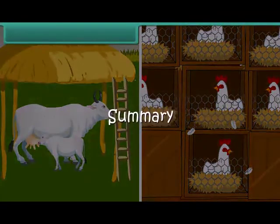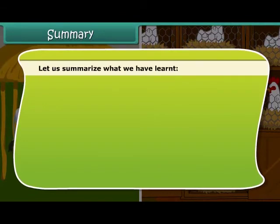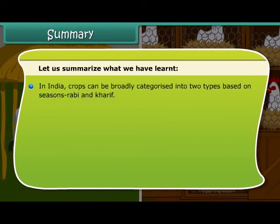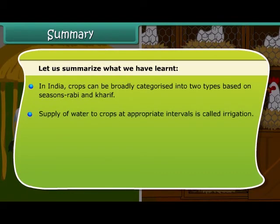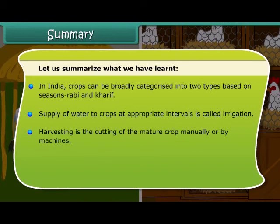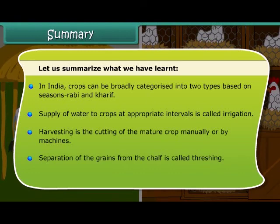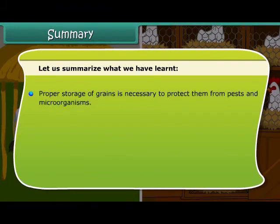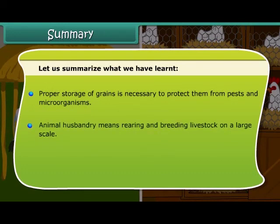Summary. In India, crops can be broadly categorized into two types based on the seasons they are grown in — Rabi and Kharif. Supply of water to crops at appropriate intervals is called irrigation. Harvesting is the cutting of the mature crop manually or by machines. Separation of the grains from the chaff is called threshing. Proper storage of grains is necessary to protect them from pests and microorganisms. Animal husbandry means rearing and breeding livestock on a large scale.